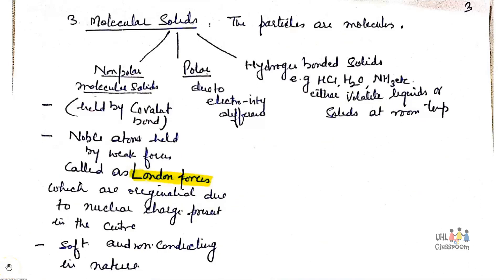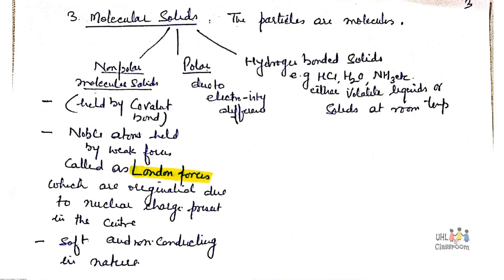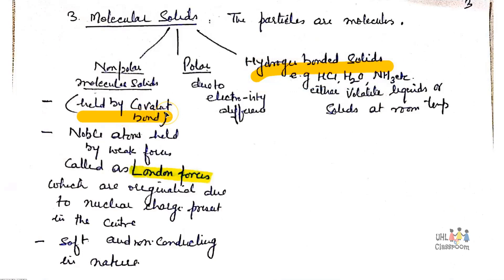The third type of crystalline solids are molecular solids. The particles in molecular solids are molecules. They are of three types: non-polar molecular solids, polar molecular solids, and hydrogen-bonded molecular solids. In non-polar molecular solids, particles are held together by covalent bonds, and in polar solids, bonding arises due to electronegativity difference.